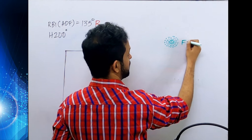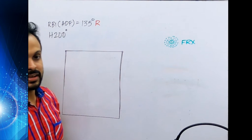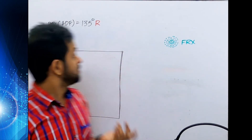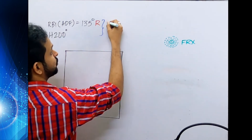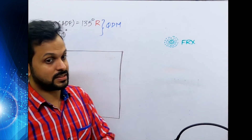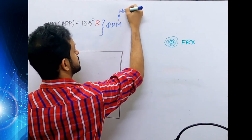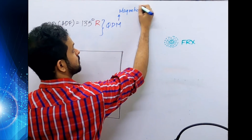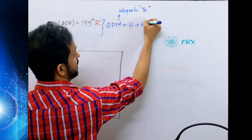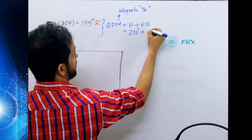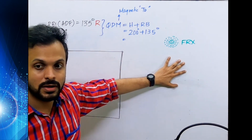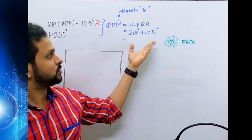Let me name the NDB as FRX - Foxtrot Romeo X-ray. The instrument says the NDB is on a relative bearing of 135 degrees. These two values - RBI and heading - give you the QDM. We have done numerous problems based on ADF and headings. The QDM is the magnetic track to the station. QDM equals heading plus relative bearing: 200 plus 135. We need the track to the station first.